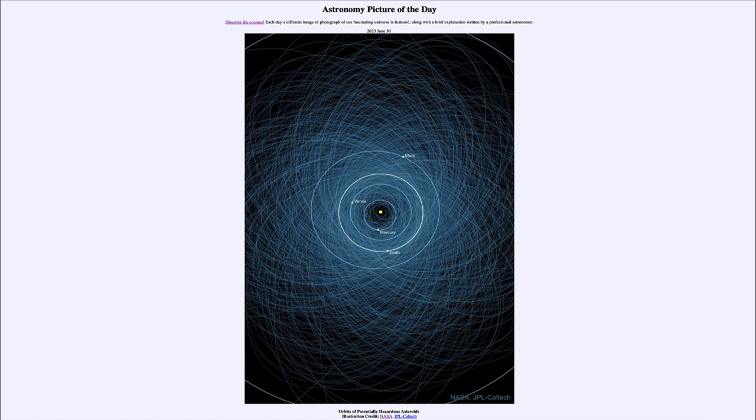well it is titled Orbits of Potentially Hazardous Asteroids. So what do we see here? Well this is an image of our inner solar system and we see the sun there at the center, the yellow dot which is not labeled.